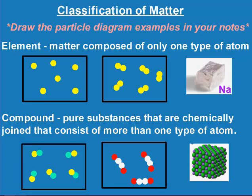That takes us to classification of matter. Make sure that in your notes, you're drawing these particle diagrams. An element is matter composed of only one type of atom. Sometimes it helps visually if you circle all the different types of matter present to figure out if it's an element, a compound, or a mixture. Elements can be monatomic — like the picture on the left — or diatomic, like the picture in the middle. You could also have 30 of the same element, or eight like sulfur, which generally forms eight of the same atom.